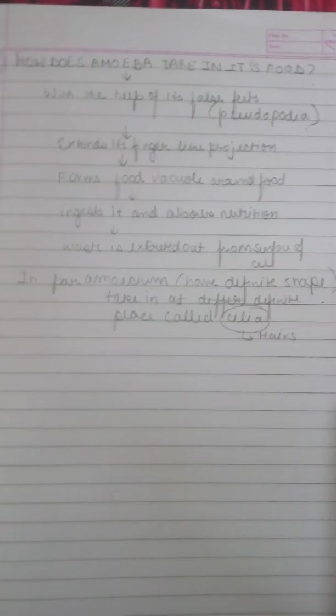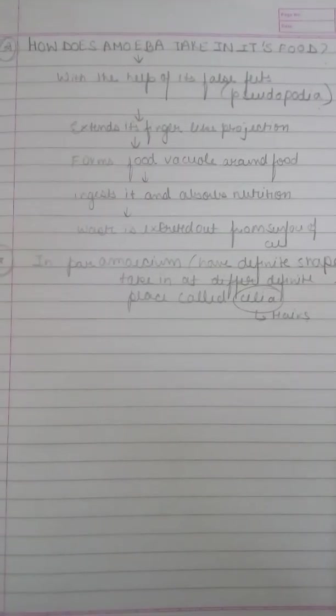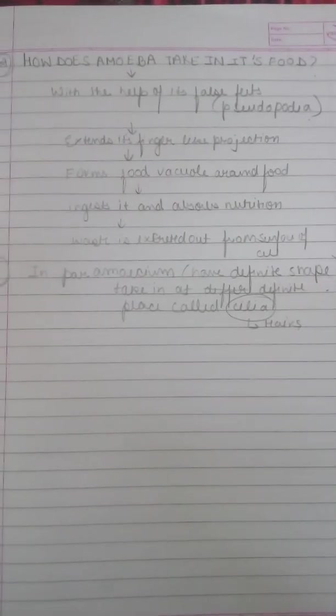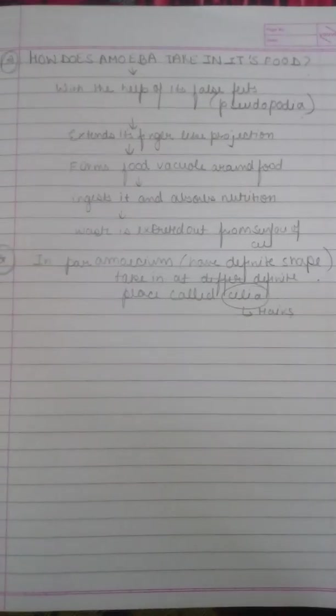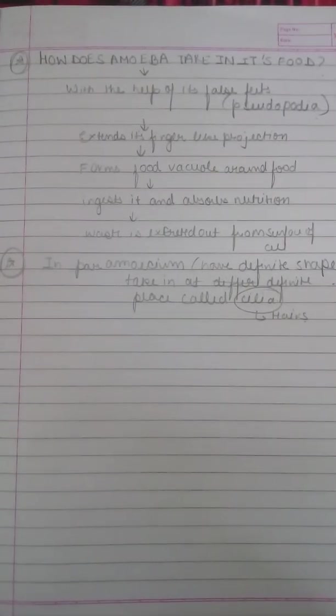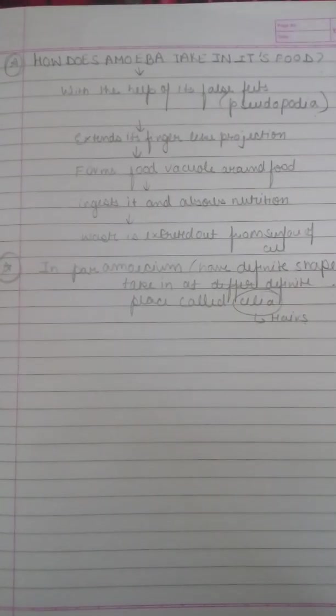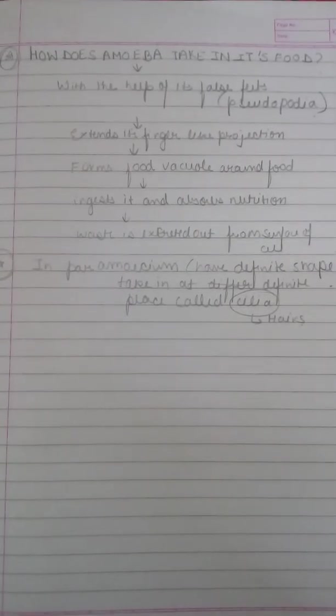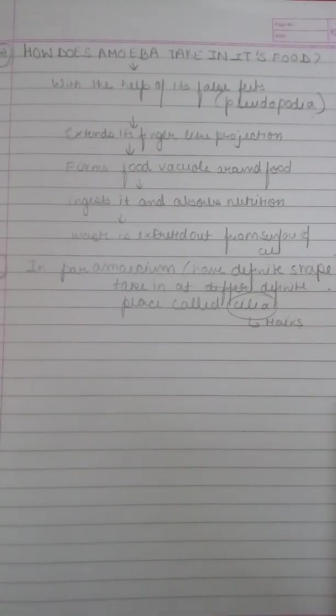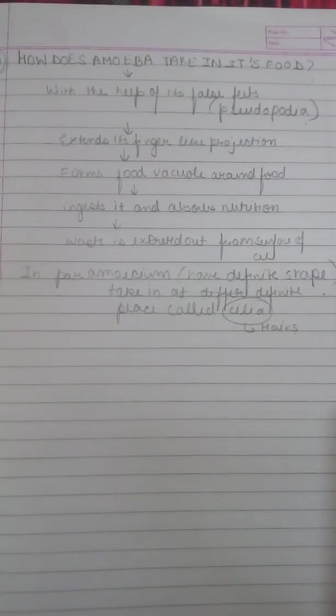Let's talk about paramecium, which has a definite shape. Amoeba does not have a definite shape. That's why it changes its shape and then absorbs the nutrition. But paramecium cannot do that. That's why it has hair-like projections through which it takes its food. It does digestion and then excretion.